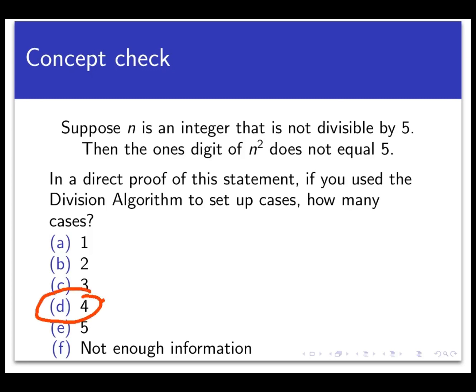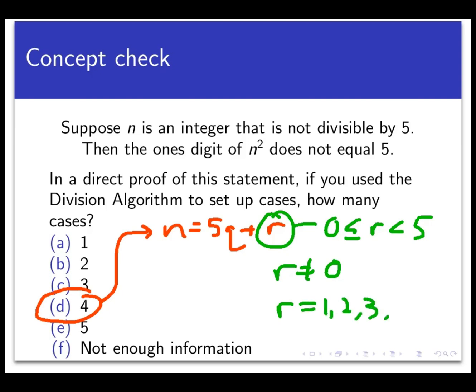So the answer here is D, 4 cases. The proposition has to do with dividing an integer by 5. And when we do that, no matter what the integer is, the division algorithm tells me that I could get a maximum of 5 possible remainders when I do this. That would be 0, 1, 2, 3, or 4. The remainder of 0 is ruled out by this proposition because of the assumption that n is not divisible by 5. So that leaves 4 possible remainders, namely 1, 2, 3, and 4.